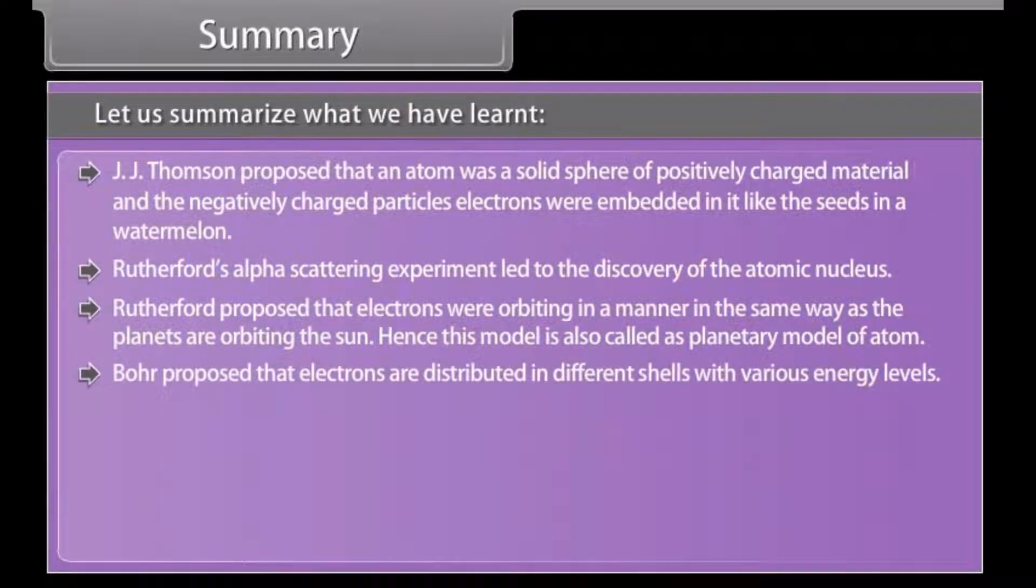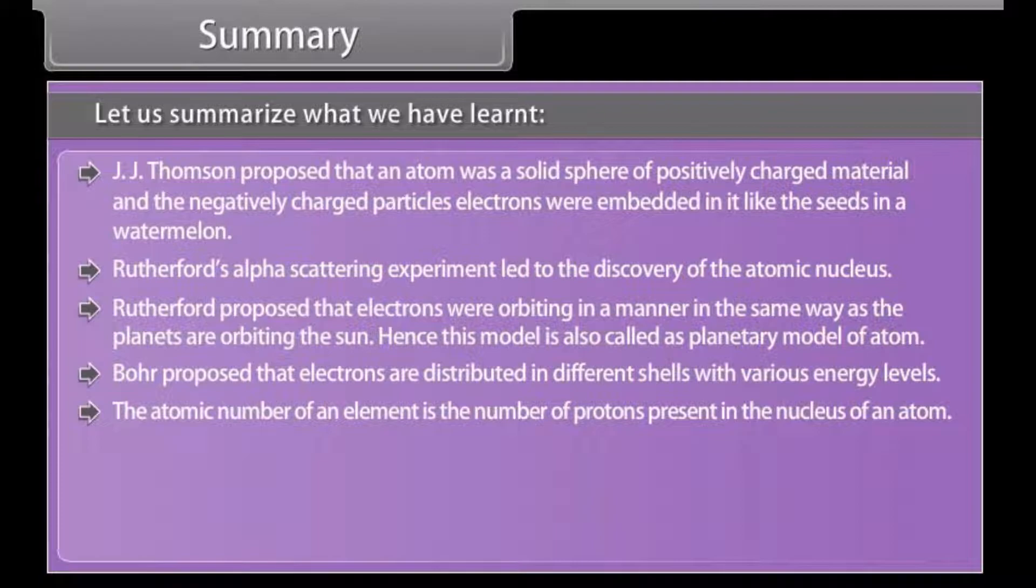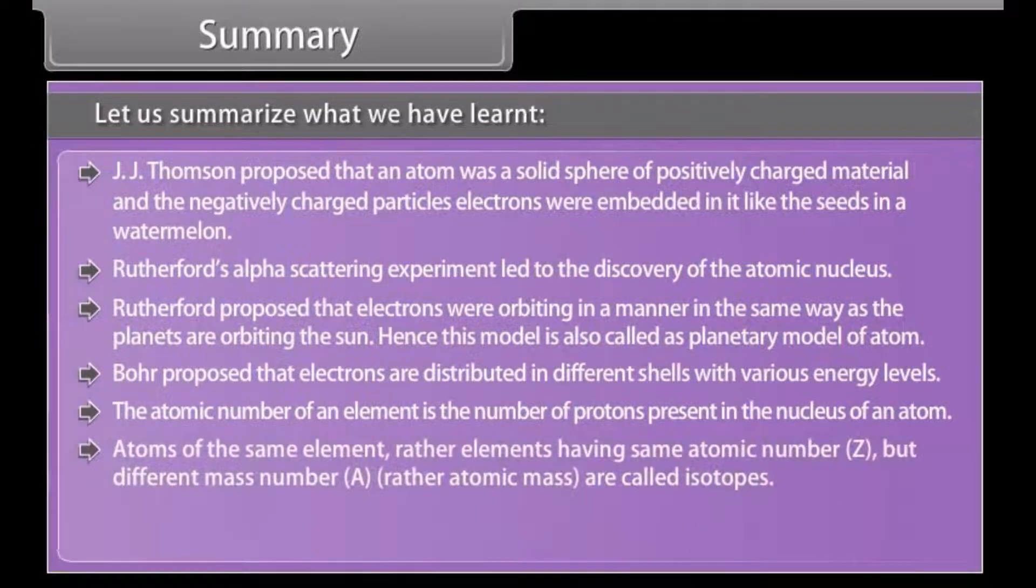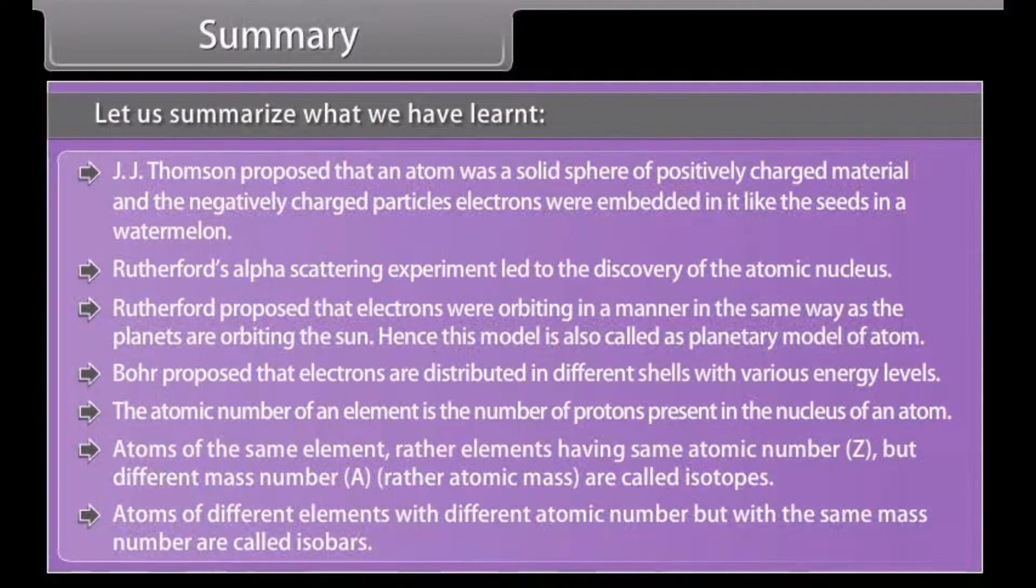Bohr proposed that electrons are distributed in different shells with various energy levels. The atomic number of an element is the number of protons present in the nucleus of an atom. Atoms of the same element, rather elements having same atomic number Z but different mass number A, rather atomic mass, are called isotopes. Atoms of different elements with different atomic number but with the same mass number are called isobars.